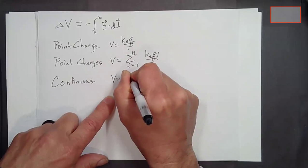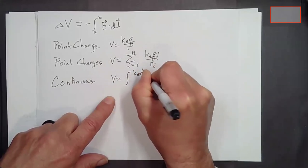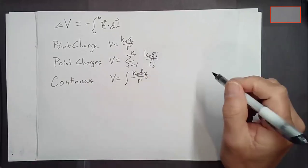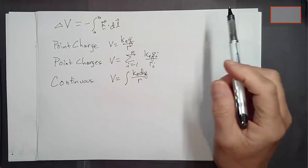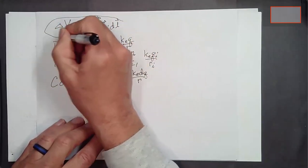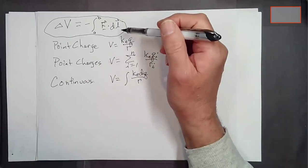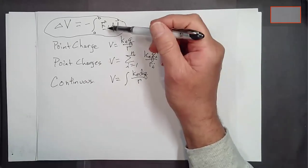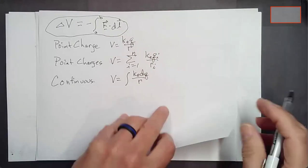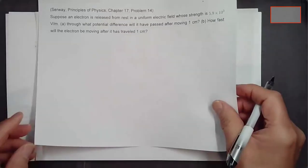For a continuous charge distribution, the electric potential would look like the integral of K_E dQ over R, integrating over that continuous charge distribution. Those are the ways you can calculate it. The first example problem I want to do is one I didn't get to last Thursday, and it's something occasionally handy to use, so don't forget about it.